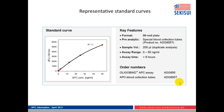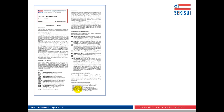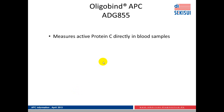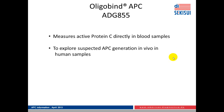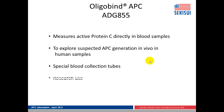Here are the order numbers again, and here you see a standard curve as observed in this assay. This is the package insert that provides all the information. In summary, we have an assay available to measure active protein C directly in blood samples. This allows us to explore APC generation in vivo in human samples. Special blood collection tubes are needed and can be obtained from American Diagnostica GmbH. The assay is for research use only.